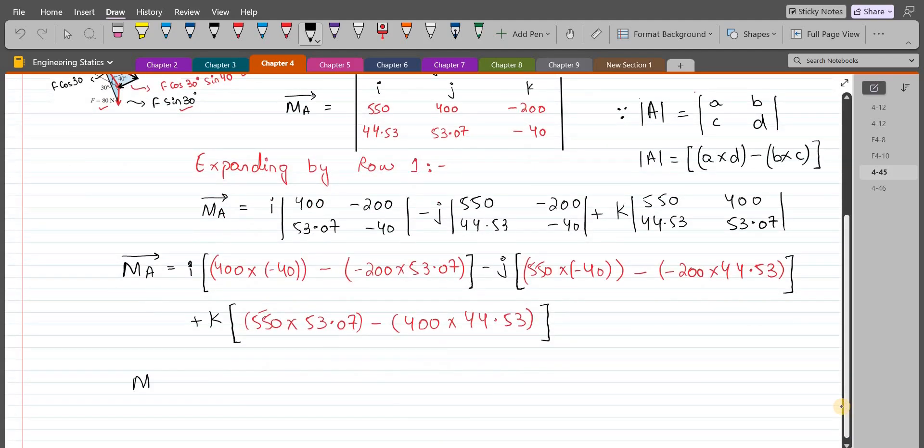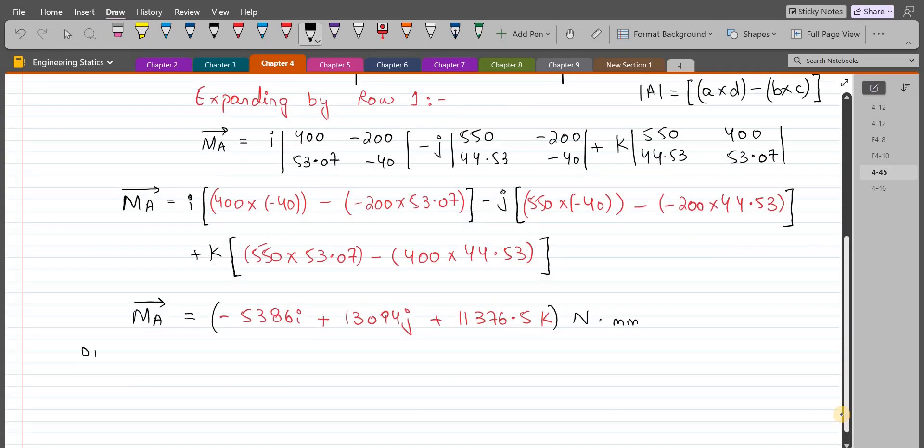Upon simplification, M_A comes out to be negative 5386 i plus 13094 j plus 11376.5 k in Newton millimeters. And if you want, you can convert it into Newton meters by dividing the values by 1000. In that case, you would have negative 5.386 i plus 13.094 j plus 11.3765 k, and that would be the answer in Newton meters.